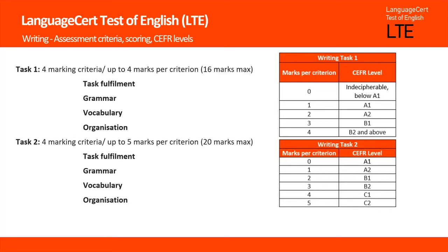Looking at the top chart, you can see that the levels of performance are: zero if the candidate's response is indecipherable or below A1 level; 1 if it's at A1 level; 2 if at A2 level; 3 if at B1 level; and 4 if it's at B2 level and above.